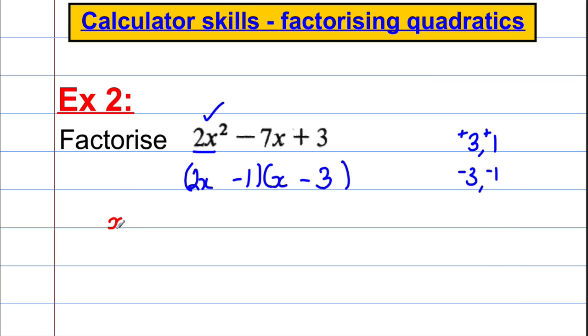So we know that x is equal to 3 and x is equal to a half are solutions. So subtracting 3 off both sides, x subtract 3 must be 0. And on this side, doubling and then taking away 1, 2x subtract 1 must be 0. And here, x subtract 3, 2x subtract 1, there are two factors.